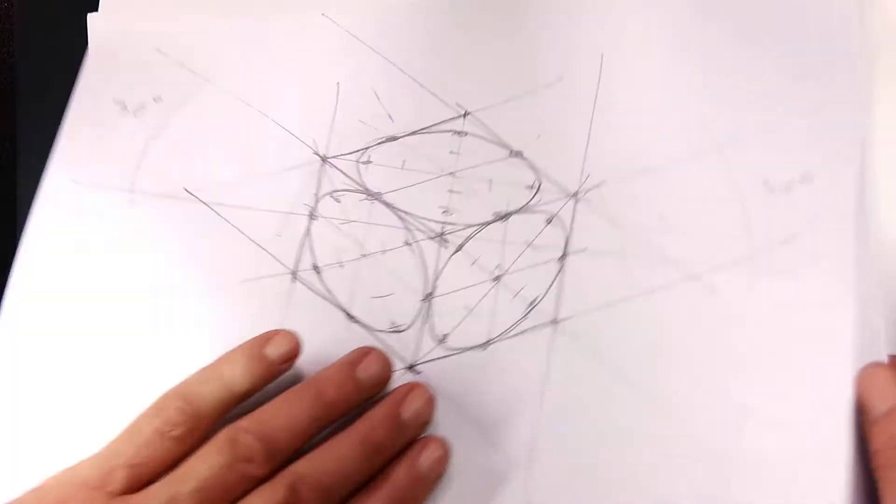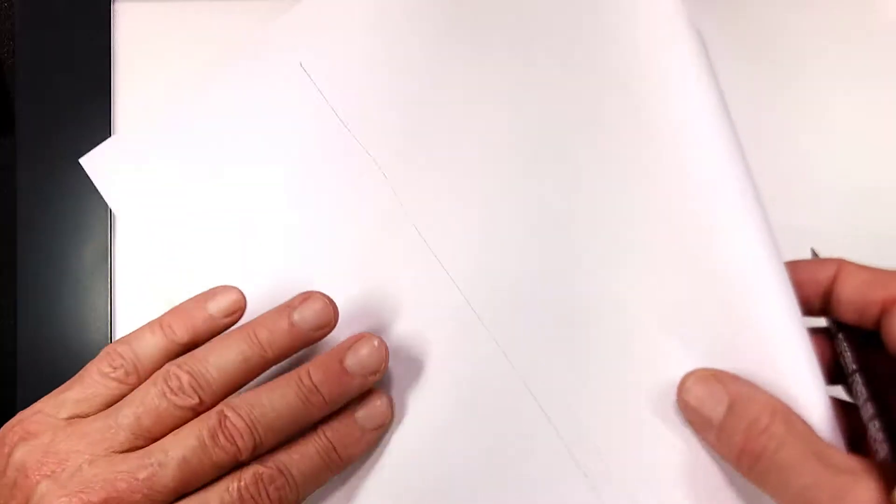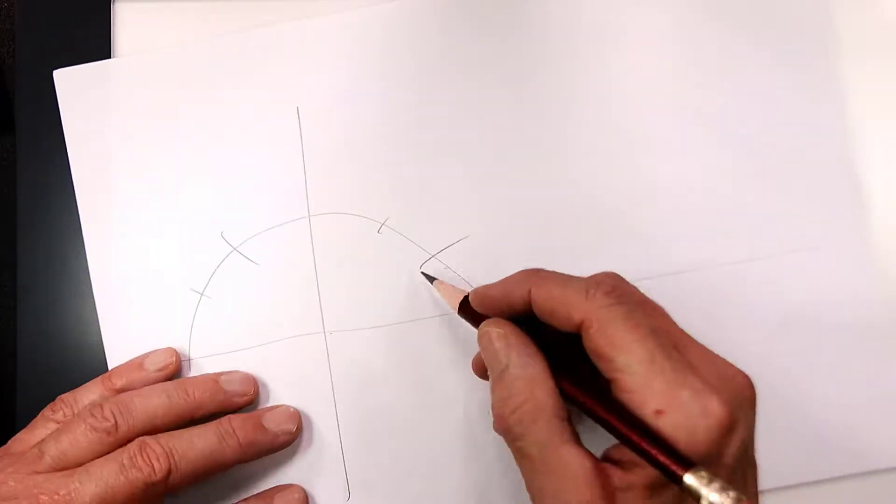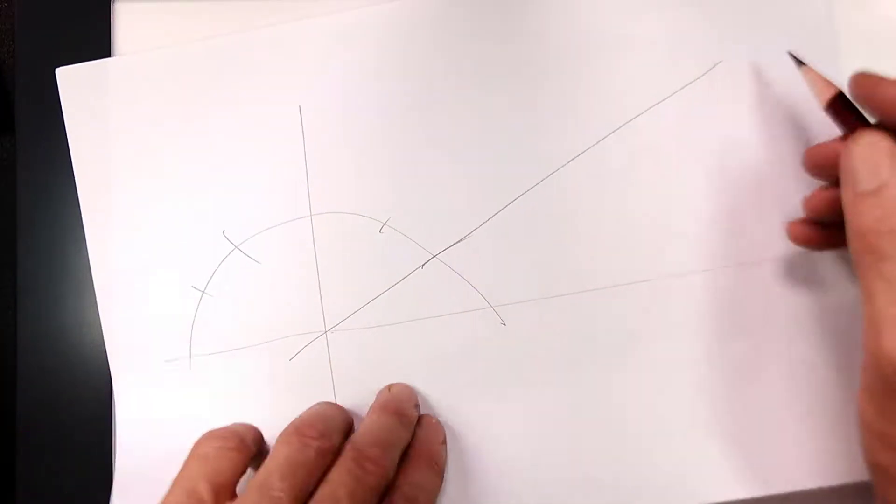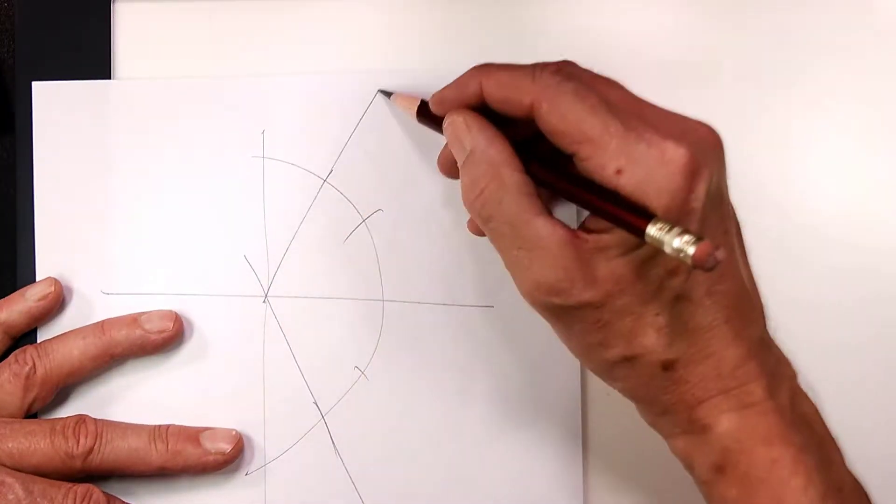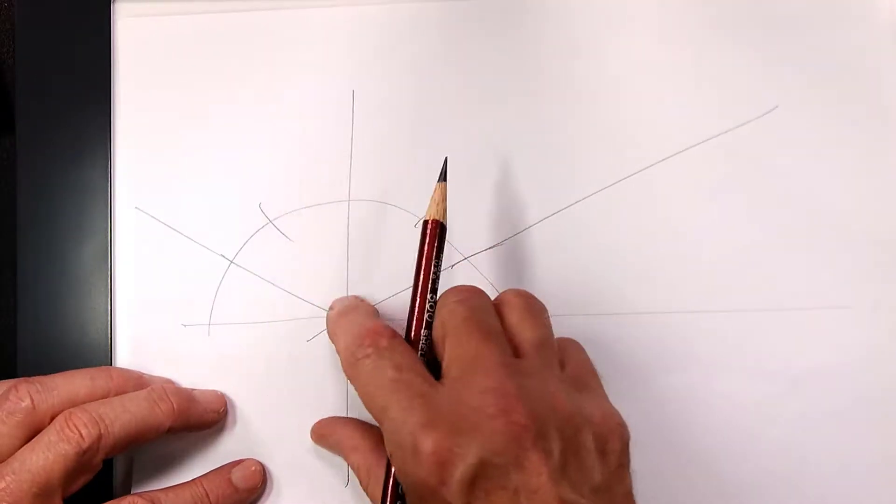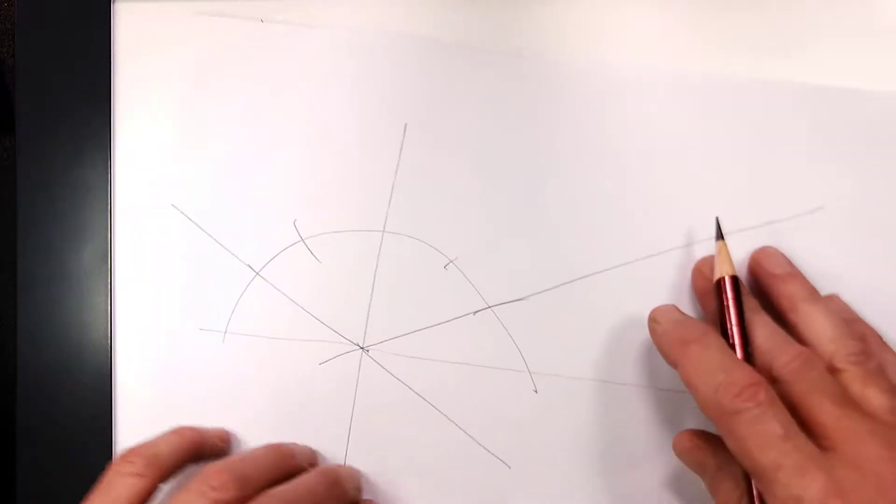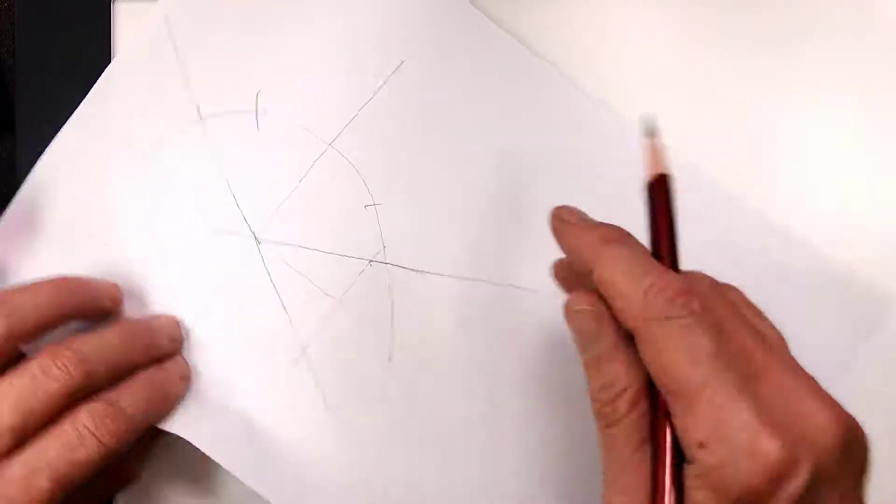Well, you can do some really interesting things. Like for instance, you can draw cylinders. So for instance, let's say I have a cylinder that is one unit diameter by three units long. This is how I would draw it. This is my one unit.